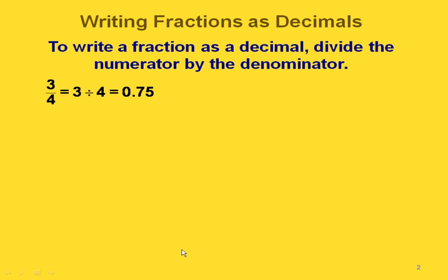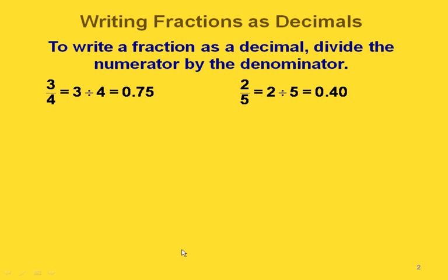Here's an example. If we want to write 3 fourths as a decimal, we just divide the 3 by the 4, and that would give us 75 hundredths. Another example: 2 fifths — if we wrote that as a decimal, we would divide the 2 by the 5, and we would get 40 hundredths.